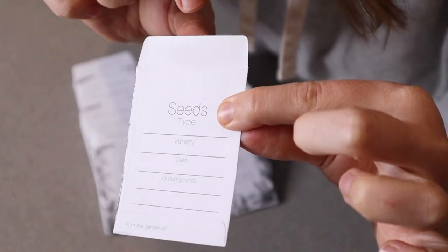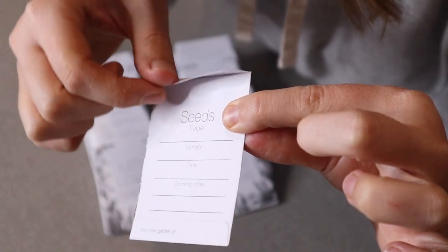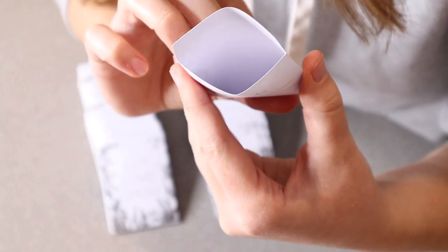And then this little flap up here is just like your standard envelope. You can just wet it to seal so it'll be nice and sealed. But you can see opened up, this will hold a lot of little seeds.